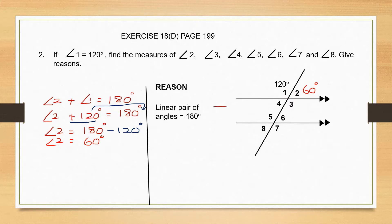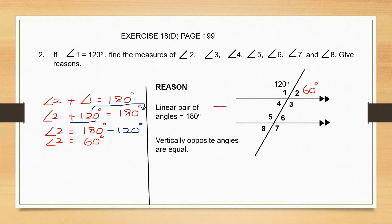So we have found angle 2. Now let's find angle 3. If you look at angle 3 and angle 1, can you see that they are vertically opposite angles? And what do we know about vertically opposite angles? Vertically opposite angles are equal. So angle 3 is equal to angle 1 because they are vertically opposite angles, which means angle 3 is equal to 120 degrees.